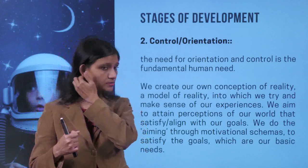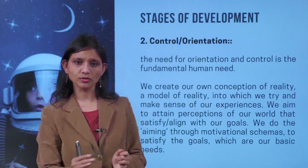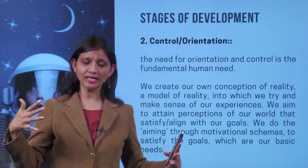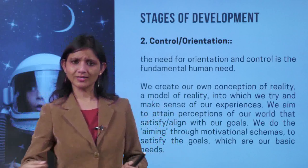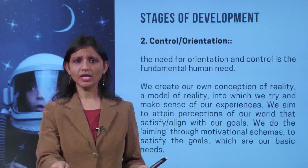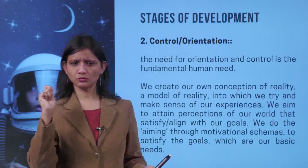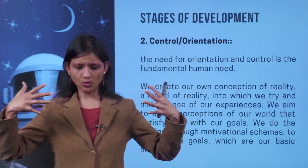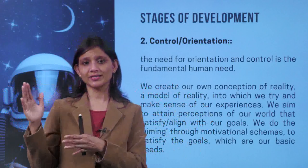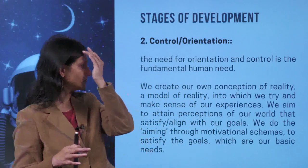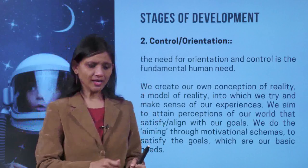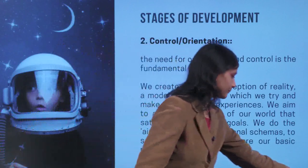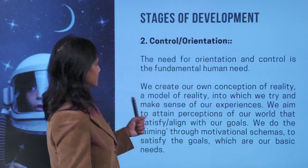There are people who by nature cannot focus on things — they do not know how to frame their goals or what steps to take to fulfill them; that is the personality trait they have. Yet there are children who have already decided what they want to become — to crack IIT-JEE, become a doctor, a police officer, or go abroad for higher studies. They have orientation and control in the goals they set. People who lack the need for control and orientation will not be focused and may not know what they want even as adults.